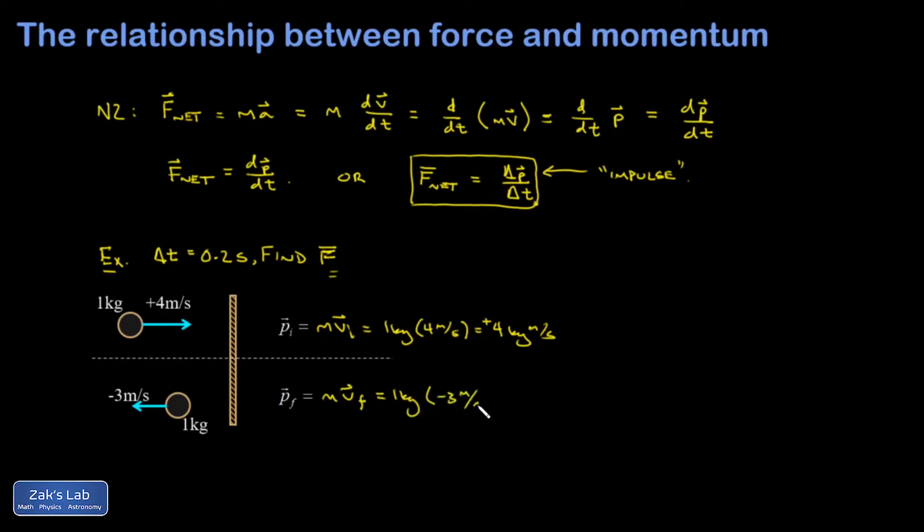So what's ΔP? It's always final minus initial. So P_final minus P_initial gives me negative three kilogram meters per second minus P_initial, which is four kilogram meters per second, which gives me negative seven kilogram meters per second. So the initial momentum pointed to the right, and then my change in momentum is very large and points to the left, and it results in a final momentum pointing to the left.